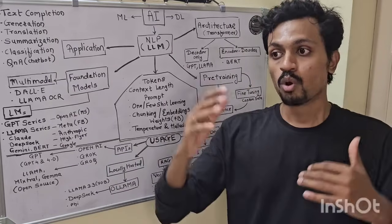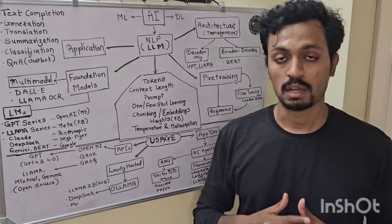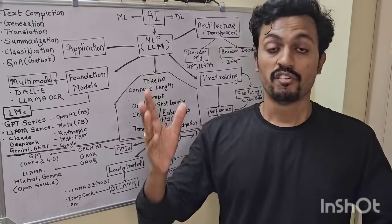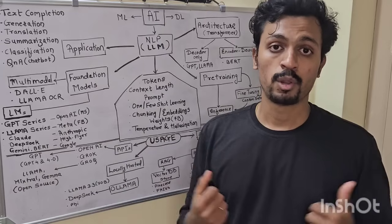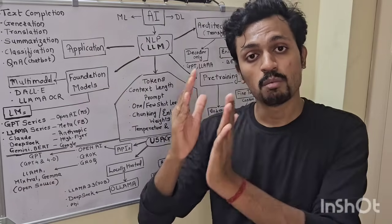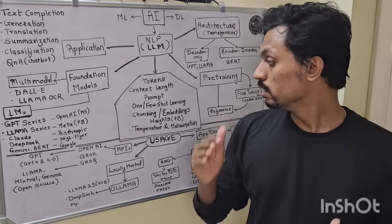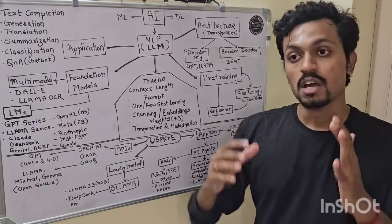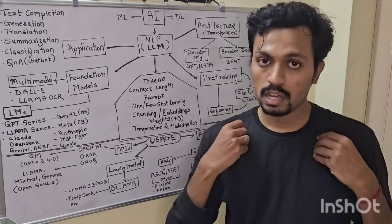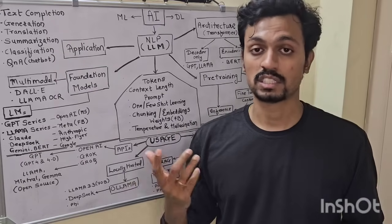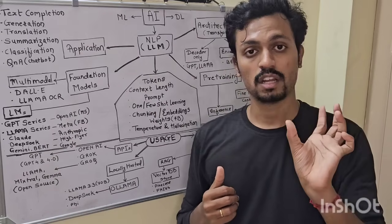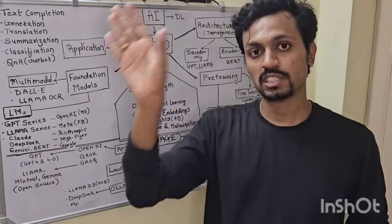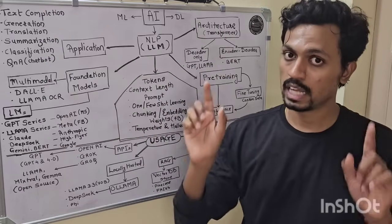Then chunking. If you have a large document — like a book — you can't feed the whole thing into an LLM at once due to context length limits. So we break it into smaller pieces — that's called chunking. Also, the LLM doesn't understand raw language; it converts text into mathematical vectors. This conversion is called text embedding.